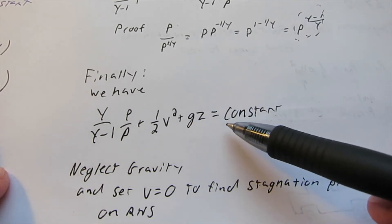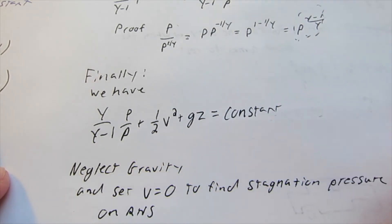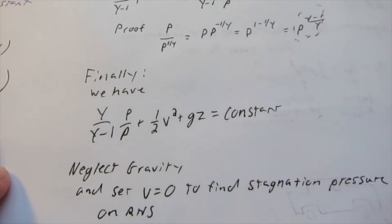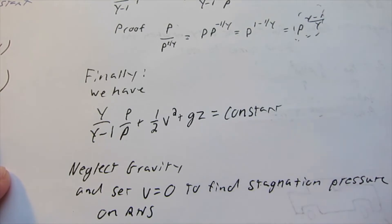And so this is along the streamline, so we can, all these can have a subscript 1 as like state 1 along the streamline, and then that equals to a certain other streamline. But again, this is all constant along a streamline.